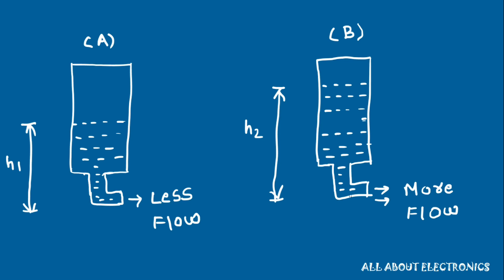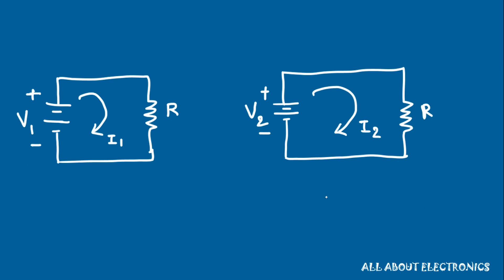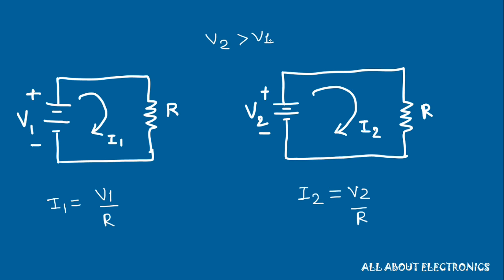Now let's correlate this with the electrical circuit. We have two electrical circuits with different voltage sources but the same resistance R. The current in the first circuit I1 = V1/R, and in the second circuit I2 = V2/R. Since voltage source V2 is greater than V1, more current flows through the second circuit, so I2 will be greater than I1.